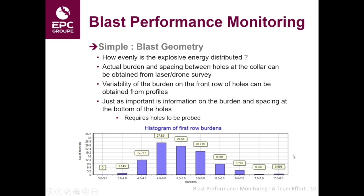Blast geometry — that's relatively simple. You will all measure pretty much everything about your blast design and geometry. Really what we're looking at is how evenly the explosive energy is distributed in the rock mass — the more evenly the energy is distributed, the better. We can look at the actual burden and spacing between holes at the collar from a laser or drone survey, and the variability of the burden on the front row of holes from profiling. Just as important is the information on burden and spacing at the bottom of the holes, which requires the holes to be probed. I'm showing an example of a histogram of front row burdens — the average burden was supposed to be around five metres and we've got a distribution about that. The less the scatter, the better.